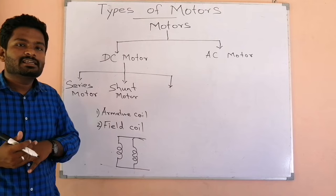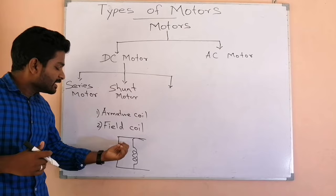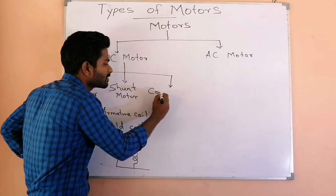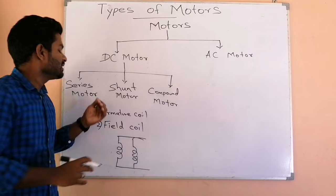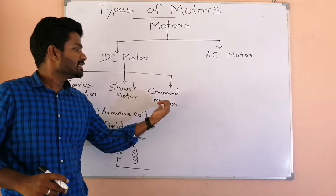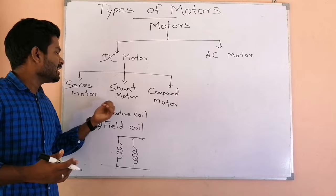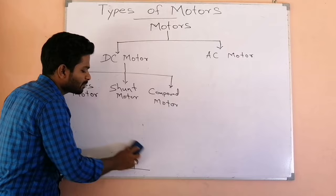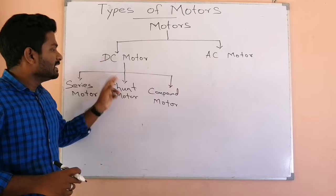The series motor provides high torque, while the shunt motor provides a stable speed. These motors show different characteristics depending on whether the coils are connected in series or parallel. The third type is a compound motor, which is a mix of both series and parallel connections. The compound motor shows characteristics of both the series motor and the shunt motor. So DC motors are mainly classified as: series motor, shunt motor, and compound motor.